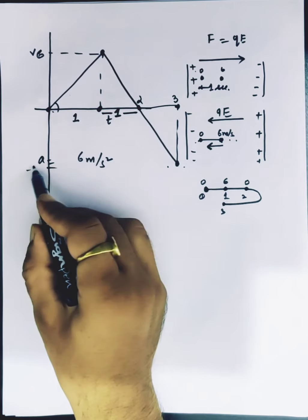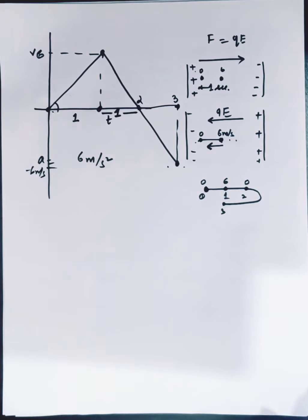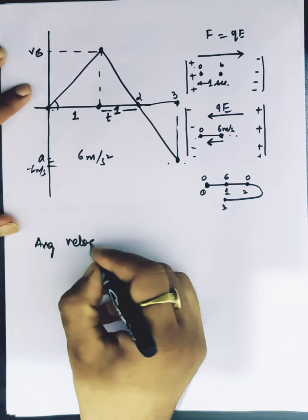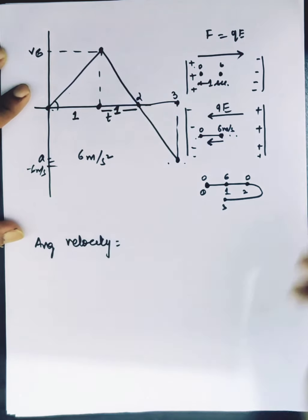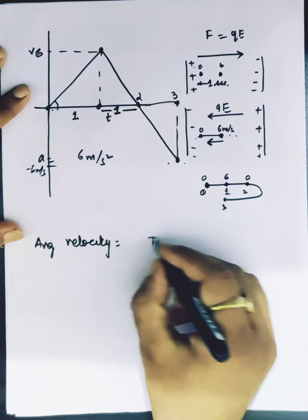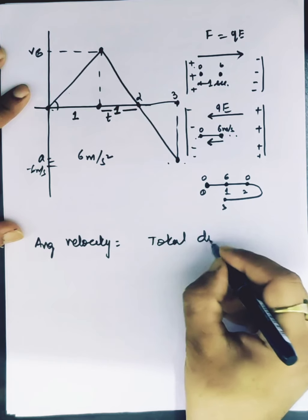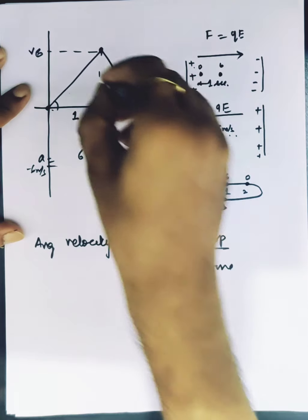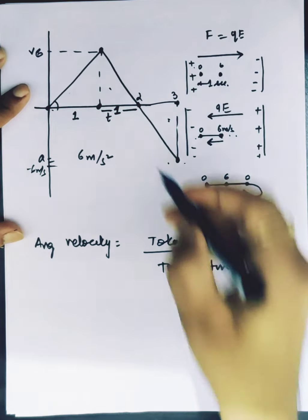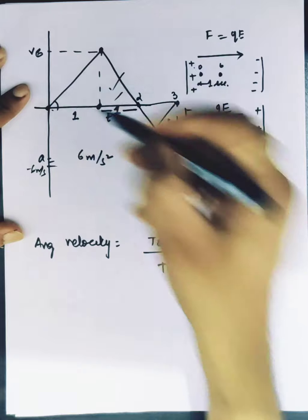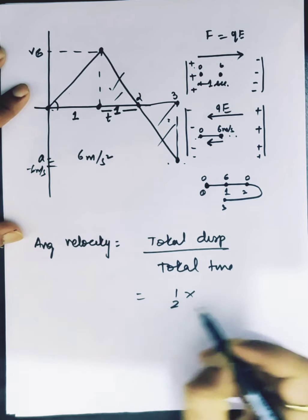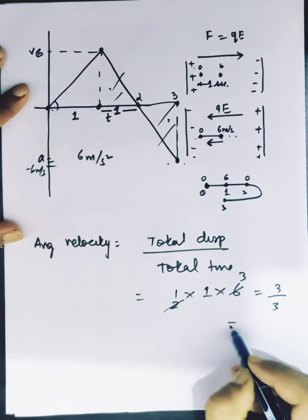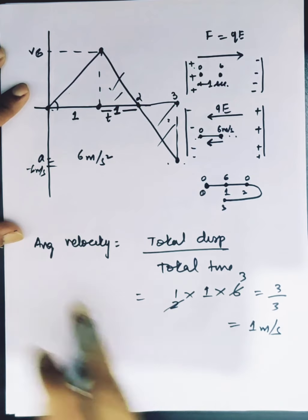Now we can find the average velocity. Average velocity is the total displacement upon total time. So this triangle is the same. If we cancel, the displacement is only this triangle. Half base 1 into height 6 is 3, divided by 3, that is 1 meter per second. That is average velocity.